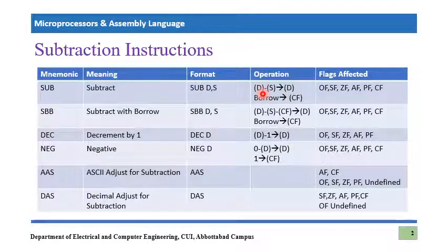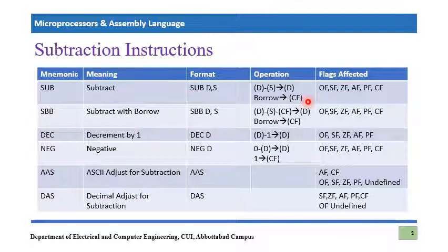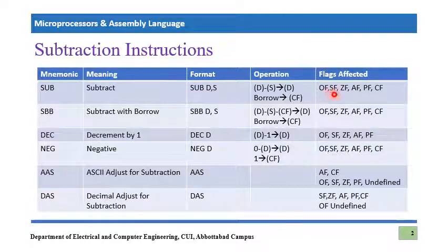One more thing: it might happen sometimes that we are subtracting a larger value from a smaller value, so we may need a borrow, and that borrow is indicated in the carry flag. Whenever there is a borrow generated, the carry flag will become equal to one in a subtraction operation. Furthermore, this SUB instruction can affect a number of flag registers, and these are the different flag bits which can be affected by the subtraction instruction. You should practice the SUB instruction in the emulator as you did with addition instructions.